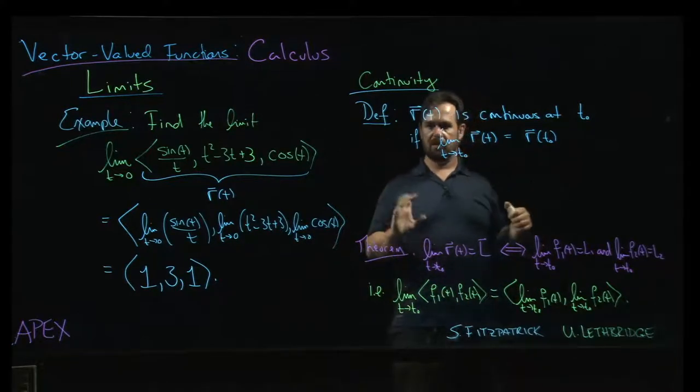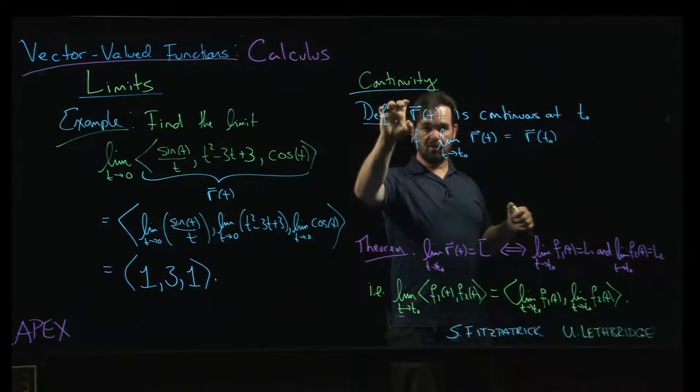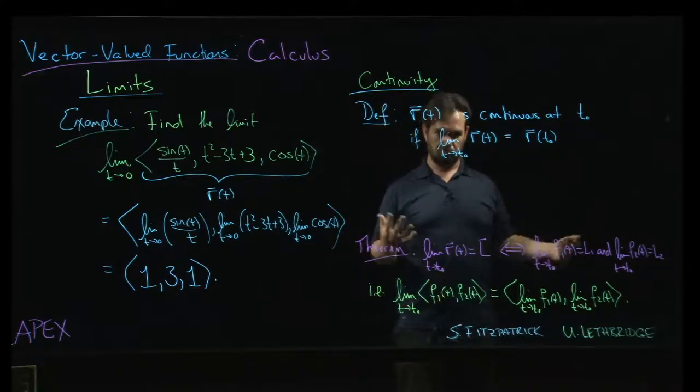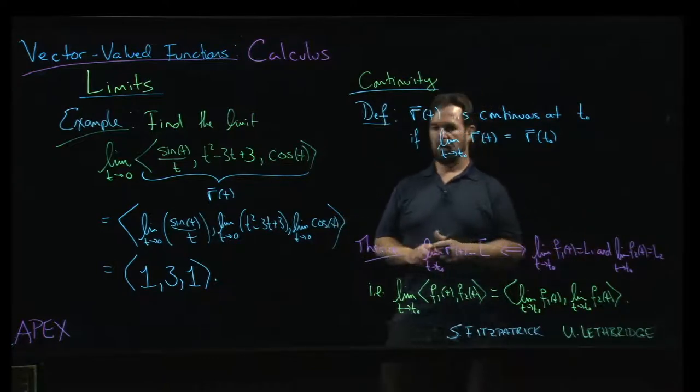So the theorem here is that our vector-valued function r is going to be continuous if and only if its component functions are continuous. Simple enough.